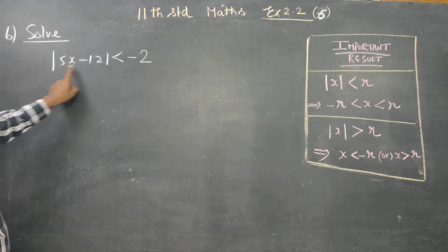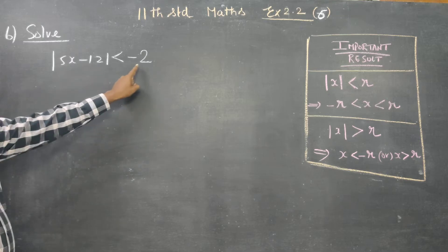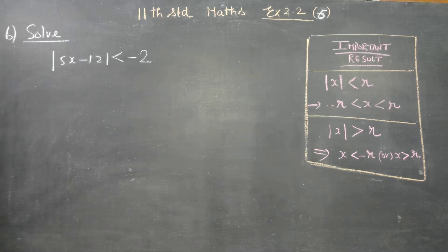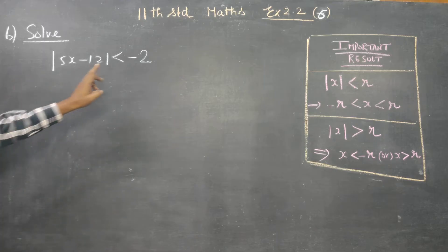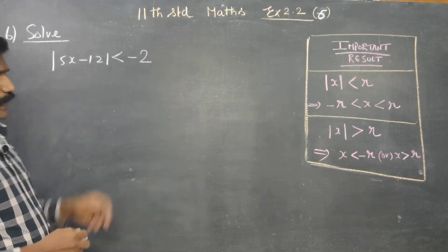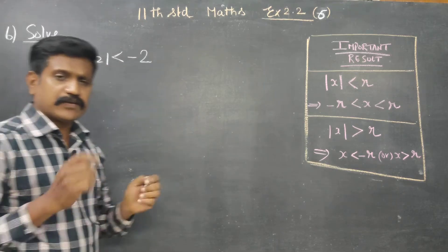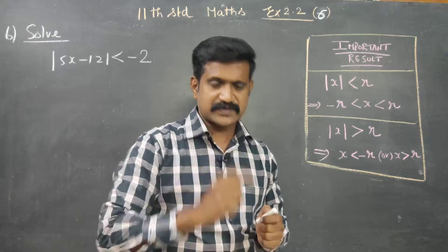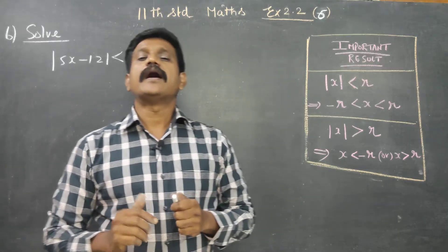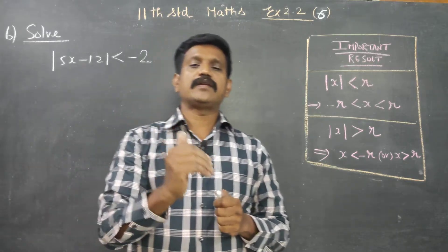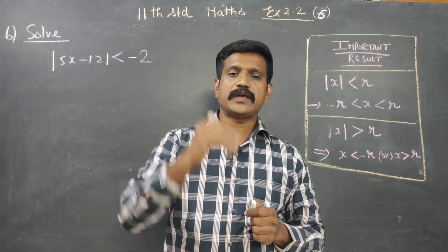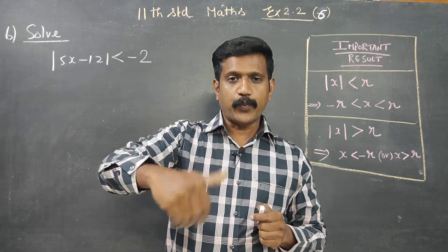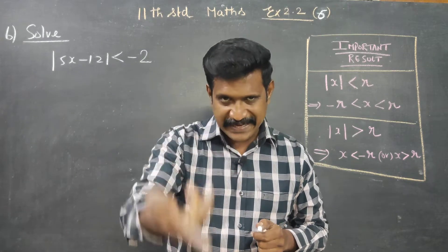The problem is: absolute value less than minus 2. Now, finding the absolute value gives a positive answer. Absolute value is meant to give a positive answer.